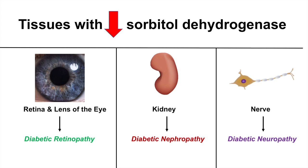Anyway guys, that was a quick lesson on the polyol pathway and the clinical relevance of the polyol pathway in diabetes. If you can understand this pathway, you'll understand a lot of what happens during diabetes and some of the pathogenesis on certain target tissues. I hope you found this video helpful. If you did, please like and subscribe for more videos like this one. Thank you so much for watching and have a great day.